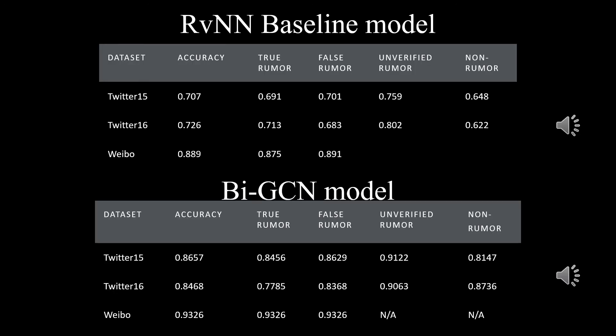For the RVNN baseline model, the accuracy of Twitter 15 and Twitter 16 datasets are 71% and 72% respectively, and the accuracy of the Weibo dataset is about 88%. These are all close to the accuracy reported in the original papers. For the bidirectional GCN model, the accuracy of Twitter 15 and Twitter 16 are 86% and 84% respectively, and the accuracy of the Weibo dataset is 93%. These results are all higher than our baseline model.